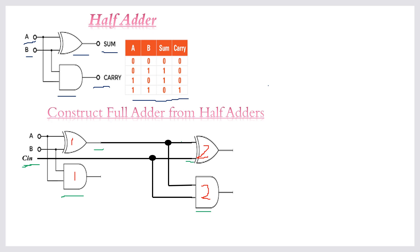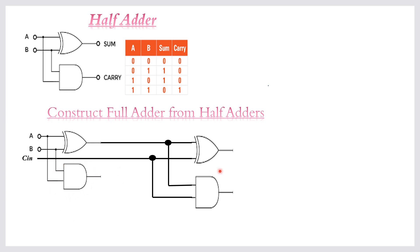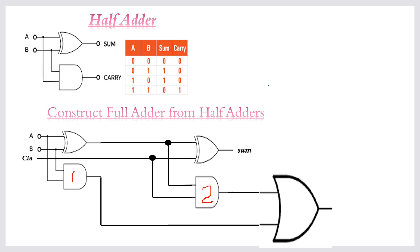The full adder summation outputs from the second XOR gate. The carry bit can come from either the first AND gate or the second AND gate, so we connect both AND gates using an OR gate. The carry bit is output from this OR gate. This is how to construct the full adder from half adders.